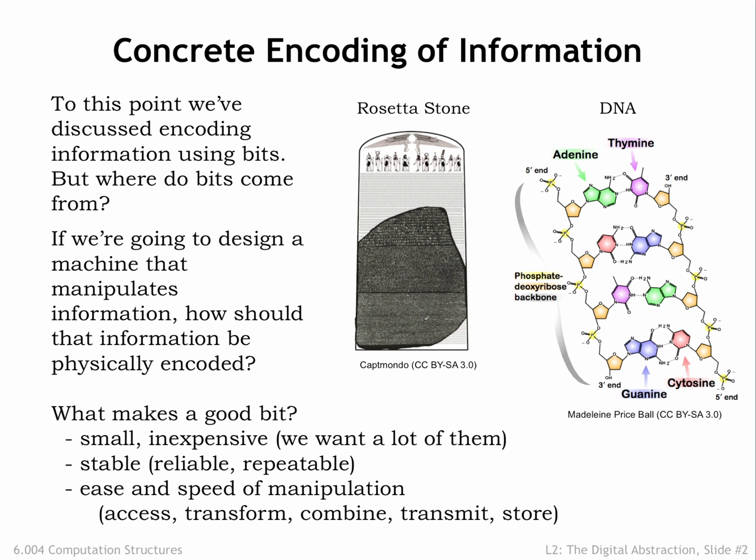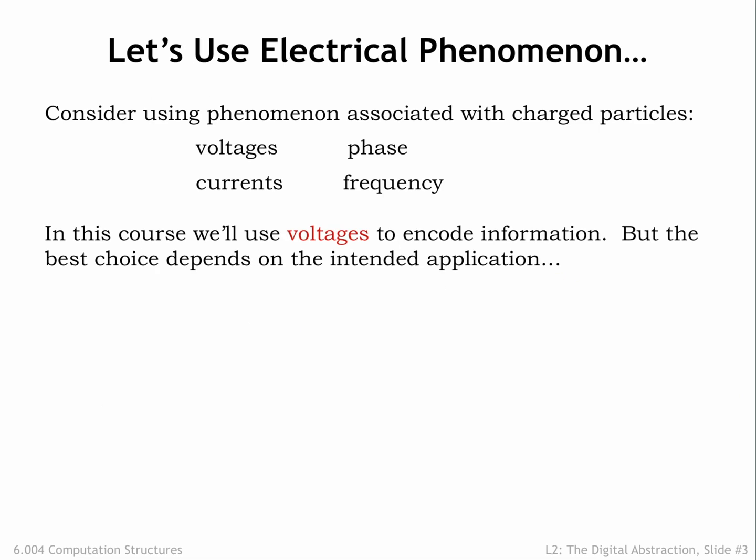Assuming we don't want to carry around buckets of gooey DNA or stone chisels, how should we represent bits? With some engineering, we can represent information using the electrical phenomenon associated with charged particles. The presence of charged particles creates differences in electrical potential energy we can measure as voltages, and the flow of charged particles can be measured as currents.